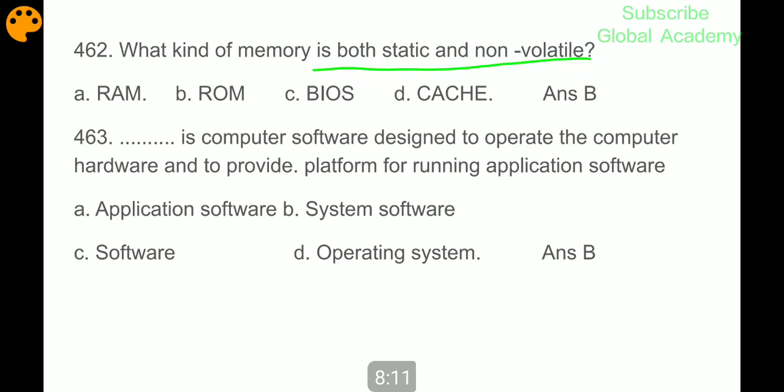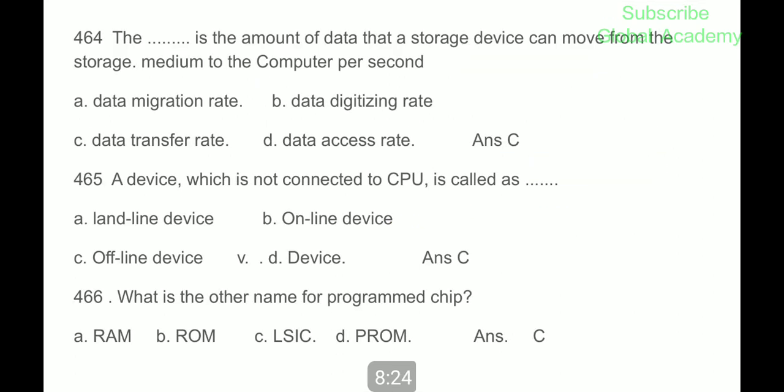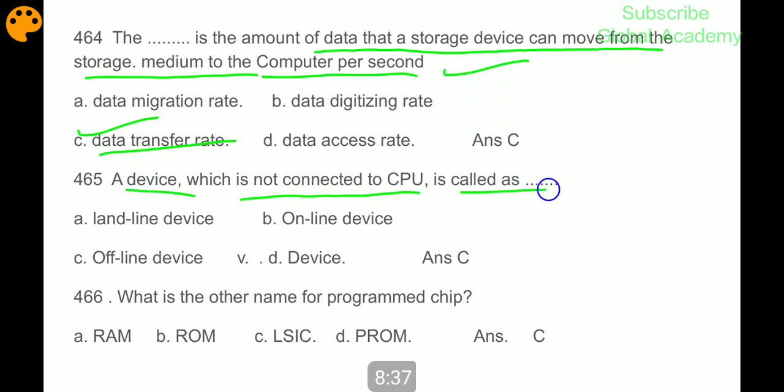Operating system is computer software designed to operate the computer hardware and to provide platform for running application software. System software. The data transfer rate is the amount of data that storage devices can move from the storage medium to the computer per second. A device which is not connected to CPU is called an offline device.